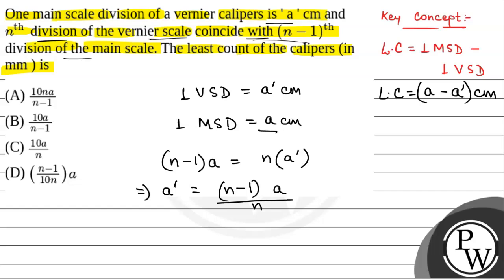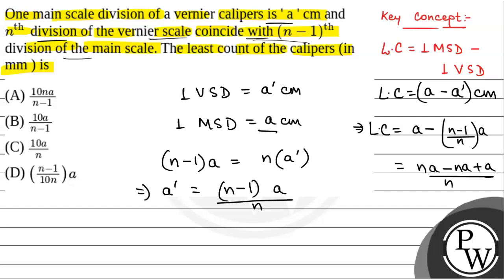The least count equals A minus (n-1)/n × A, which simplifies to NA minus (n-1)A all over n, giving A/n centimeter. So the least count in centimeter is A/n.